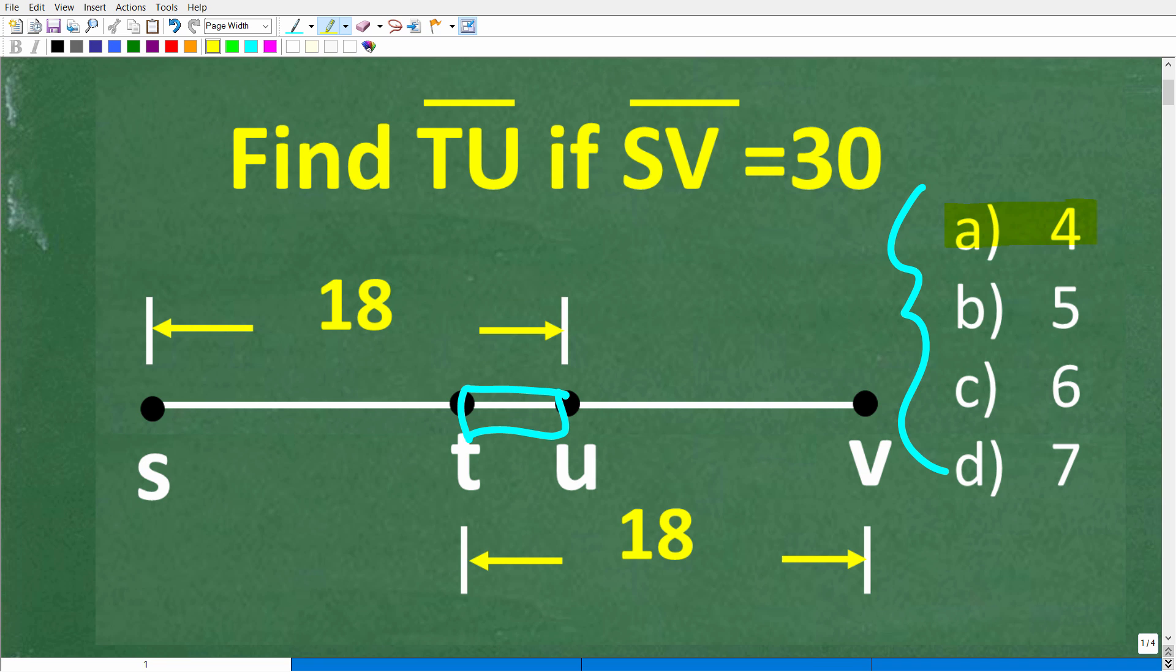And let's take a look at our choices. So A is 4, B is 5, C is 6, and D is 7. Now if you have the answer, put that into the comment section. I'll share the correct answer in just one second.